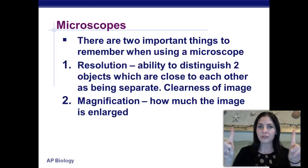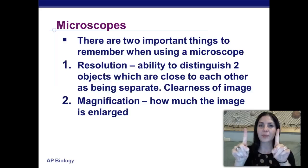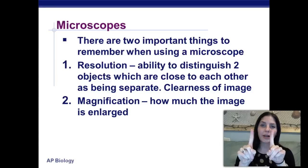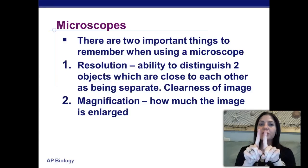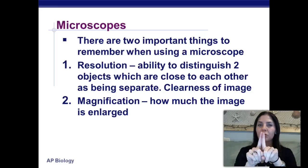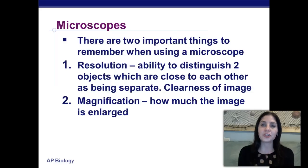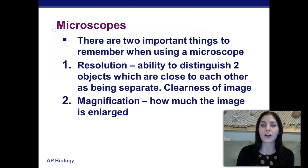Resolution is the ability to distinguish two objects which are close to each other as still being separate. So if I was to bring my fingers right here and you had a microscope, resolution would be whenever you could see that there are still two objects. Once those objects kind of blur into one, the resolution is bad. Two is magnification — this is how much the image is actually enlarged.